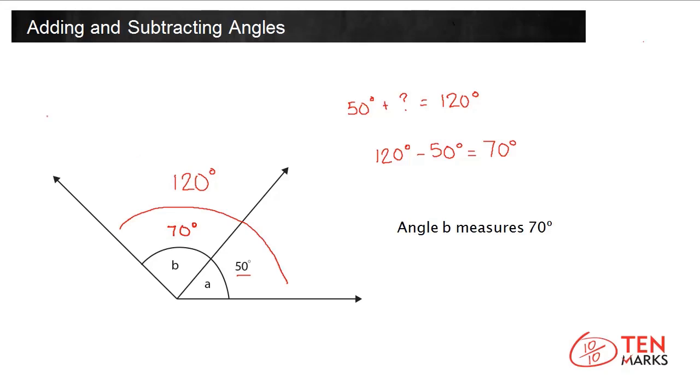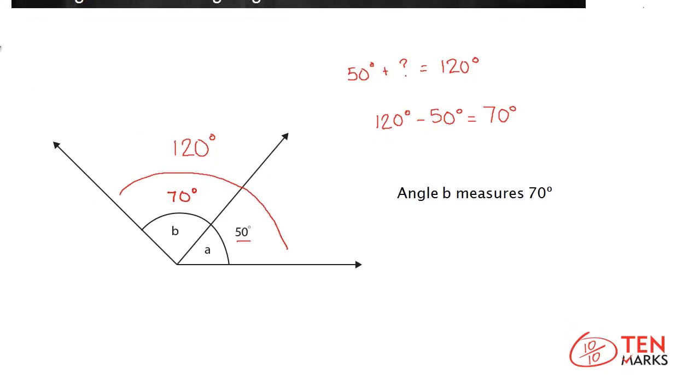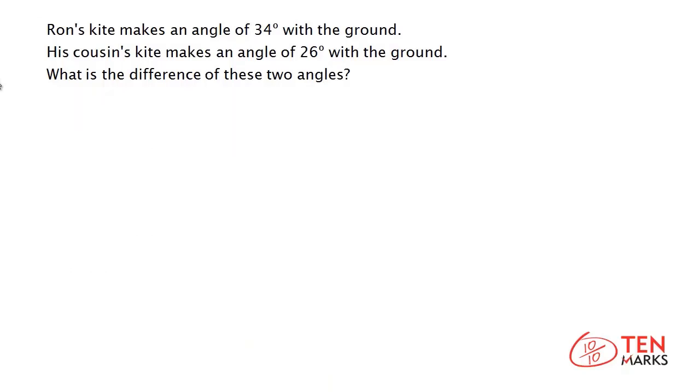Let's take a look at another problem. Ron's kite makes an angle of 34 degrees with the ground. His cousin's kite makes an angle of 26 degrees with the ground. What is the difference of these two angles?